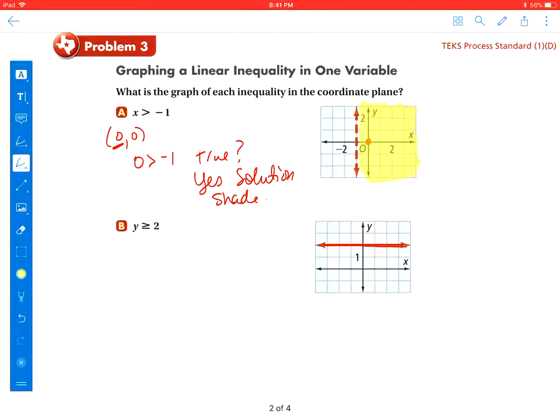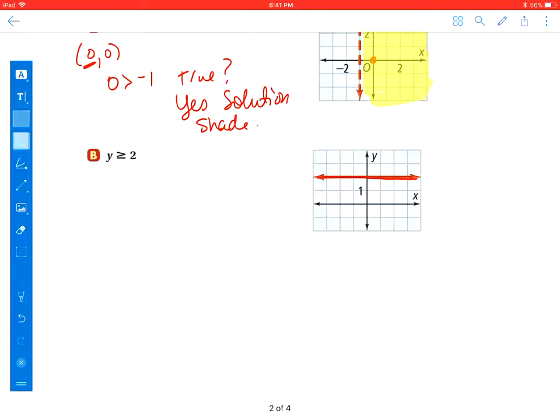So that means it should be shaded. So I'm going to shade my 0. So that means it's going to be to the right of our graph.